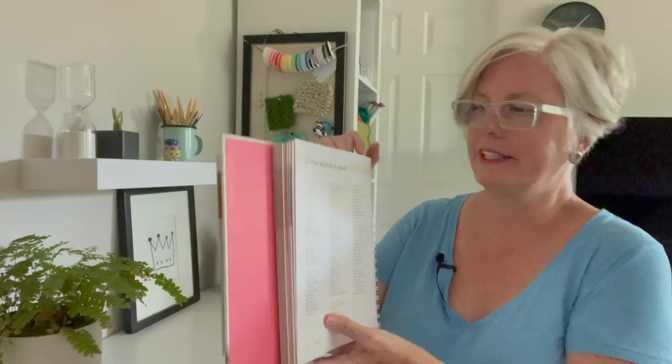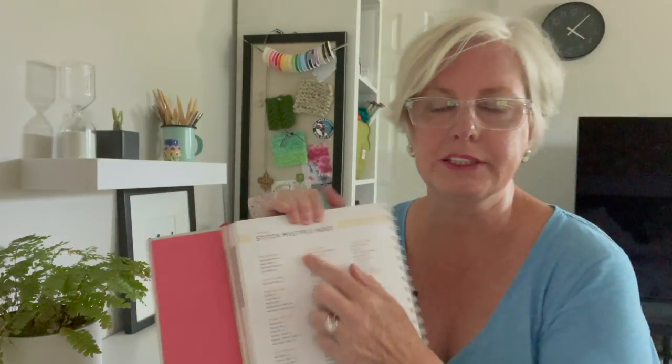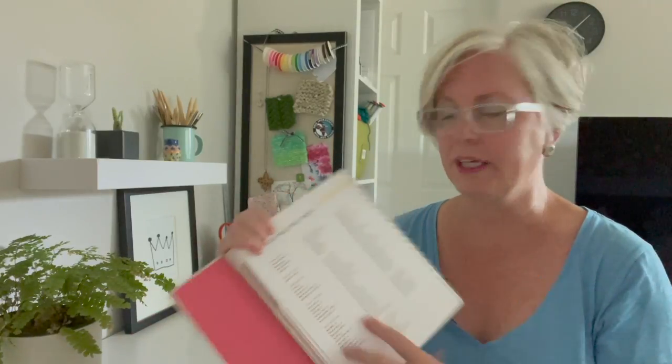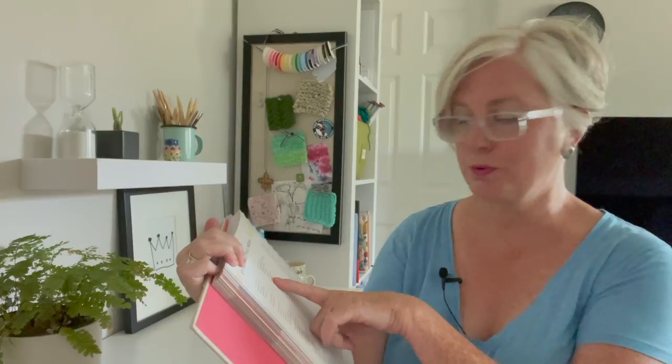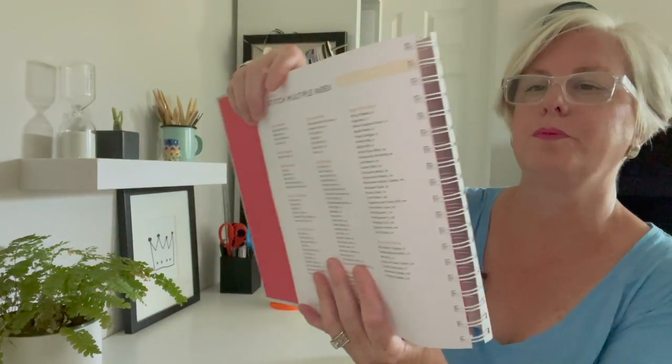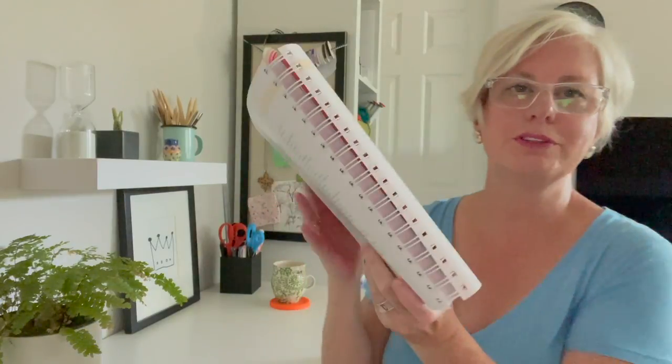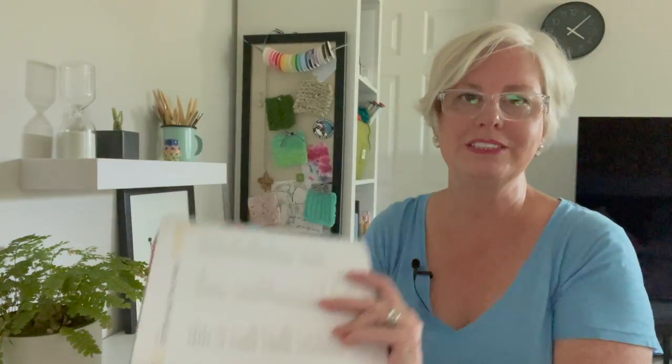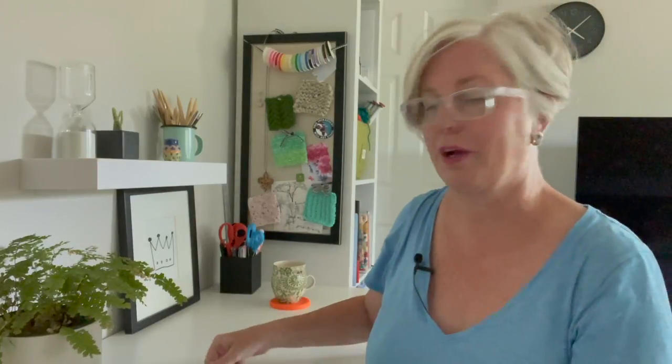One more thing I'd like to say about this book: she has a stitch multiple index. So if you know you want to cast on 40 stitches, you can find something divisible by 40 — five stitches would work, eight stitches would work, ten stitches would work — and see all the different patterns that fit. There are so many options and ways to use this and really have fun with it. I hope you check it out and I'll see you in the next video.